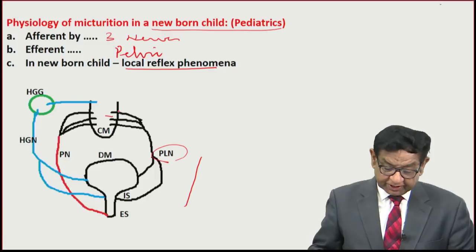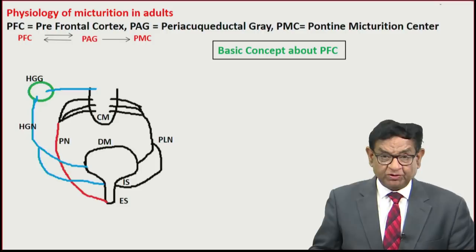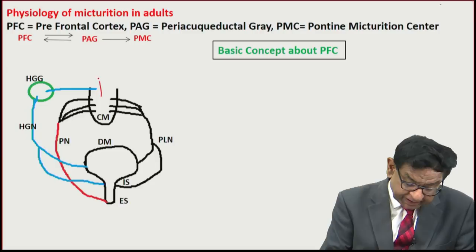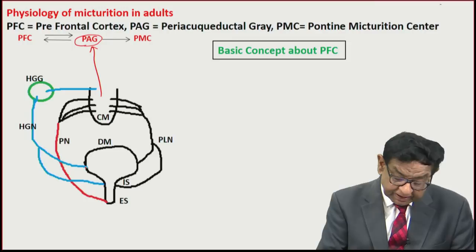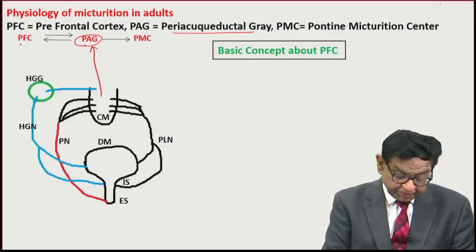In adults, it's not a local reflex phenomenon. When the bladder gets filled up, the message comes to the lower end of the spinal cord, then travels to the brain stem to the PAG — the periaqueductal gray. The message then goes to the prefrontal cortex.